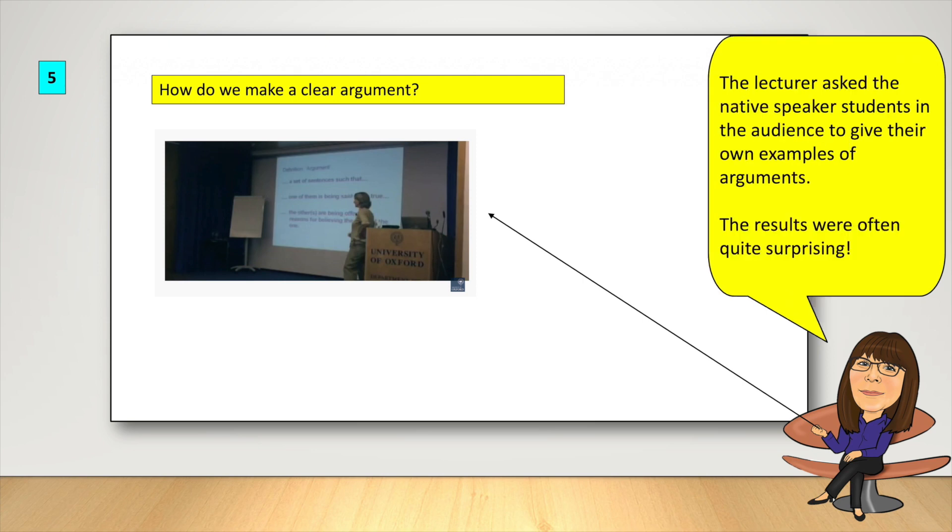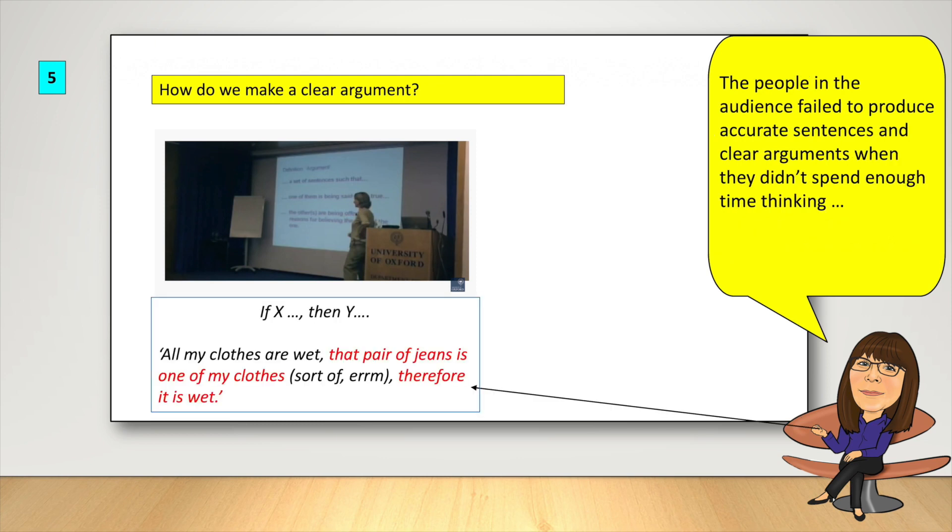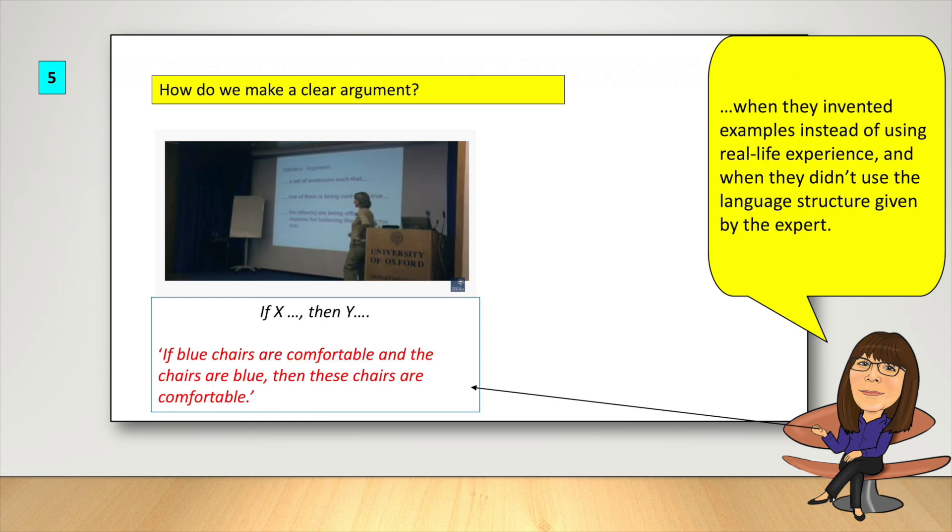The lecturer asked the native speaker students in the audience to give their own examples of arguments, and the results were often quite surprising. The people in the audience failed to produce accurate sentences and clear arguments when they didn't spend enough time thinking, when they invented examples instead of using real-life experience, and when they didn't use the language structure given by the expert.